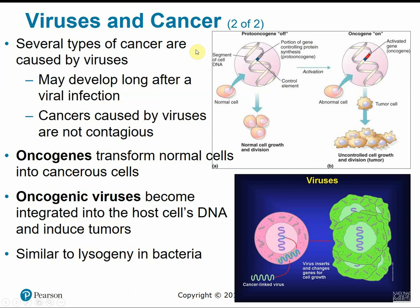Several types of cancers — about 10% — are now known to be caused by viruses. Some of these cancers may develop long after a viral infection and are not contagious. Basically, anything that can alter the genetic material of a cell has the potential to become cancerous. Oncogenes are genes that can transform a normal cell into a cancer cell — normally inactive, but triggers such as mutagens, radiation, or oncogenic viruses can activate them. Oncogenic viruses can become integrated into a host cell's DNA, causing changes in that cell and inducing tumor growth.